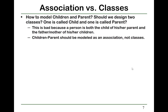We need to avoid modeling associations as classes. For example, how to model children and parents? Should we design them as two classes — a child class and a parent class? This is obviously bad because a person is both the child of their parents and the parent of their own children. So children and parents should be modeled as an association, not as classes.